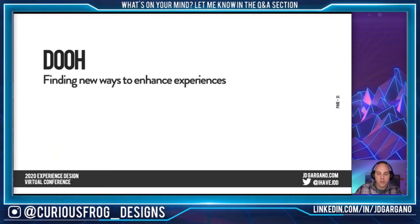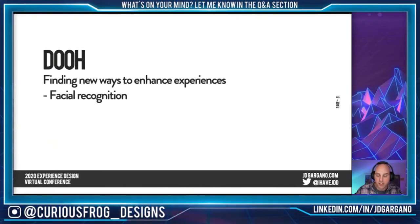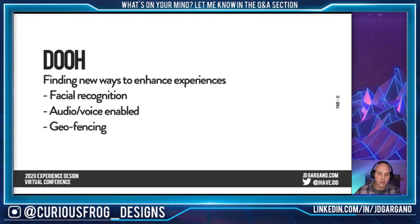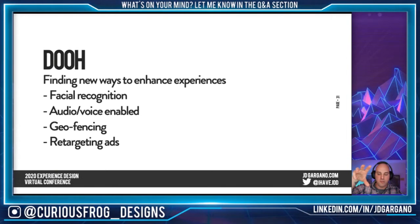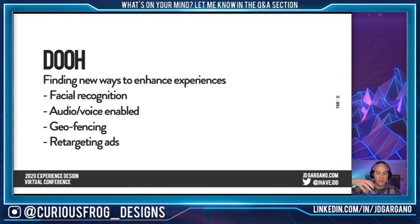So when it comes to digital out of home, we're always trying to find new ways to enhance experiences. Some ways we do that is with facial recognition. I'm not going to dive too deep, but I just want to bring it to your attention — some of the ways that digital out of home experience is being enhanced: facial recognition, audio voice, geofencing. Geofencing is basically devices in buildings or in the cloud that kind of blanket an area or a building. That device will capture user behavior and information from your phones — it knows your shopping behaviors and patterns. And as a result of geofencing, that's how we can retarget ads.